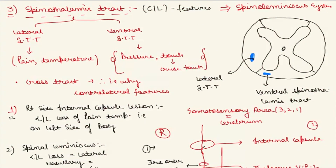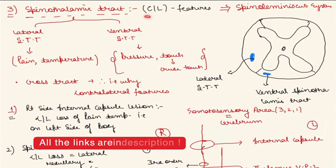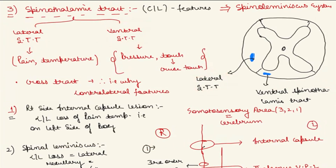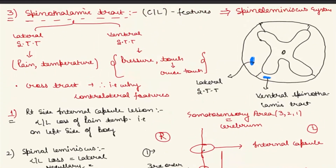The third tract is the spinothalamic tract, studied under the spinal lemniscus system. It always produces contralateral features. It is divided into the lateral spinothalamic tract, which carries sensations of pain and temperature, and the ventral spinothalamic tract, which carries pressure and crude touch — for example, touching an area with a cotton piece rather than a fine needle. It is a crossed tract, so contralateral features always appear.